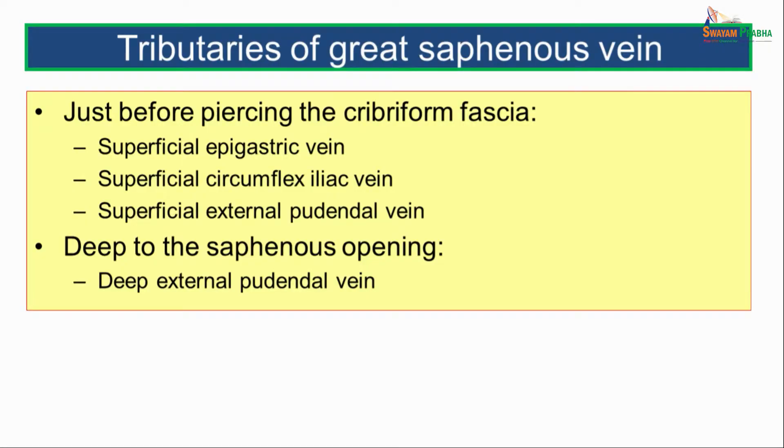Deep to the saphenous opening, just before the great saphenous vein terminates, it receives the deep external pudendal vein. This deep external pudendal vein passes posterior to the spermatic cord and drains venous blood from the anterior part of the perineum. These are the various tributaries of the great saphenous vein.